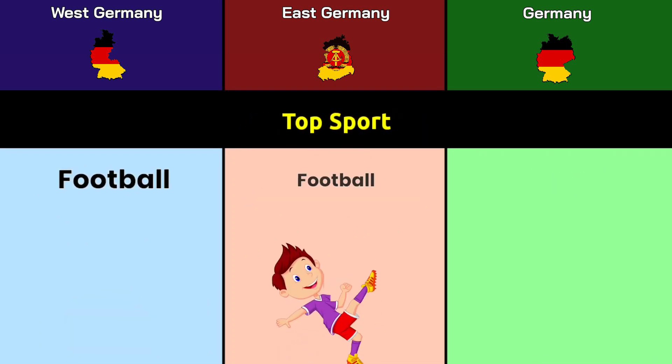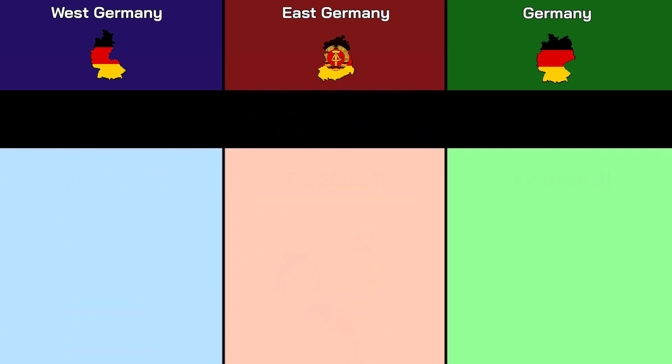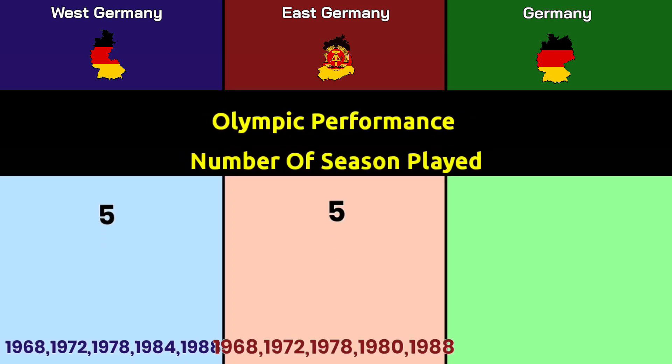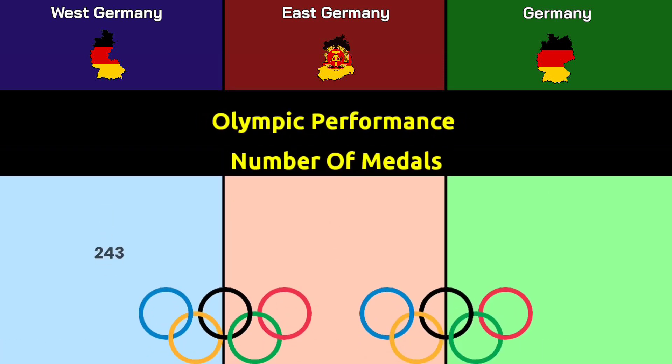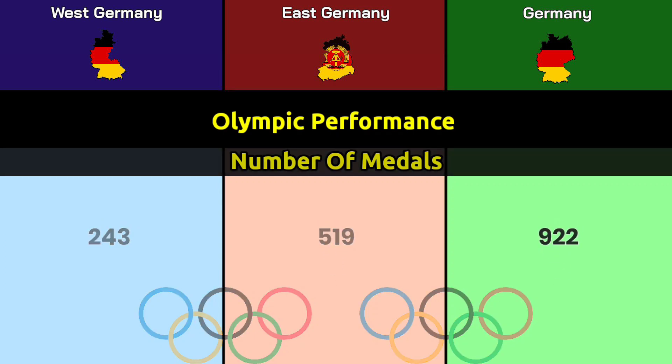Top sport: football for all regions. Olympic performance — number of seasons played: West Germany participated in 5, East Germany in 5, and modern Germany in 17. Number of medals: West Germany won 243, East Germany won 519, and Germany has won 922.